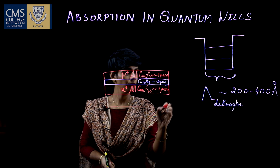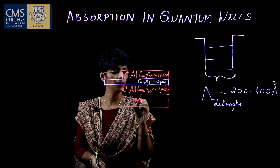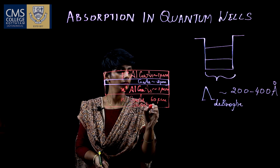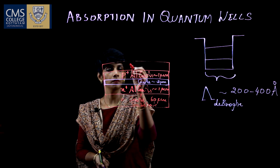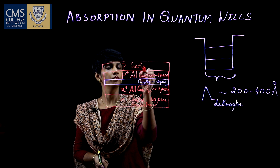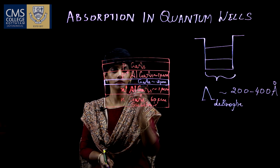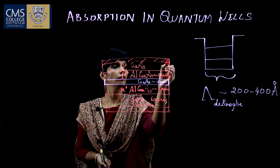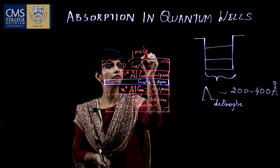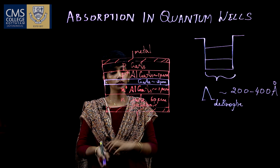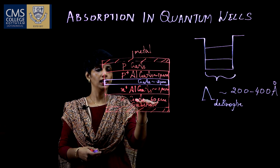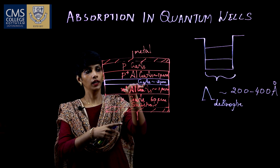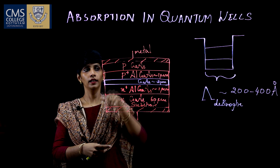Below this, we have N-type gallium arsenide having a thickness of 60 micrometers, which serves as the substrate. We also have a P-type gallium arsenide layer and metal contacts for ohmic contact. This structure is grown one above the other: first we take gallium arsenide as the substrate, then we grow N-plus aluminium gallium arsenide, then gallium arsenide, and then P-plus aluminium gallium arsenide.